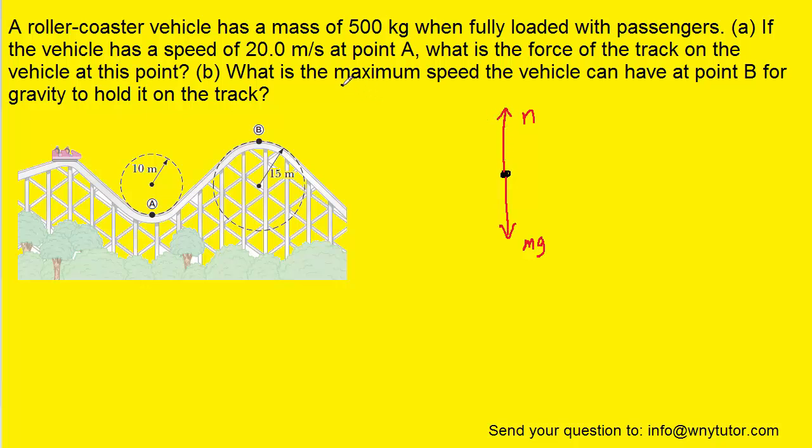But in part B, we're being asked to find the maximum speed. So we can imagine the vehicle coming up the hill here, moving very fast. And it's going so fast that for just a moment, the wheels of the vehicle will leave the surface of the track.